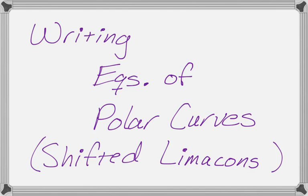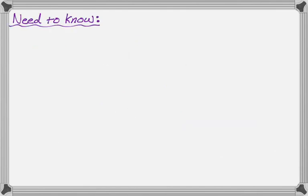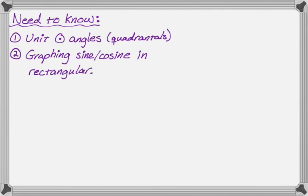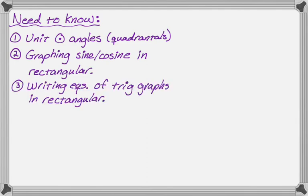Let's talk about what you need to know before you can do this. First thing you need to know, you need to know unit circle angles, which hopefully you do if you've gotten to polar coordinates, specifically the quadrantals. We need to know how to graph sine and cosine in rectangular, because we really want to write the equations of trig graphs in rectangular, specifically sine and cosine.